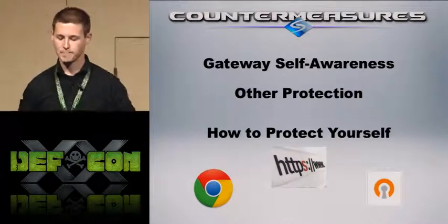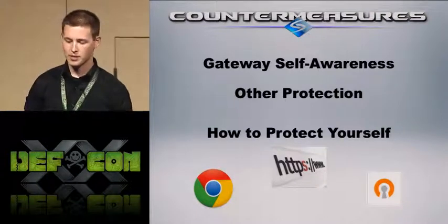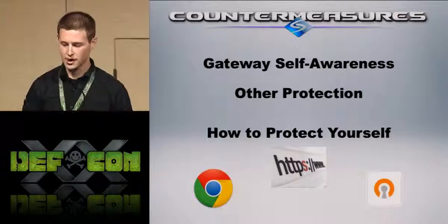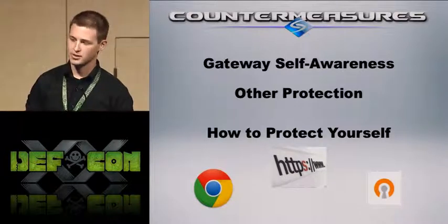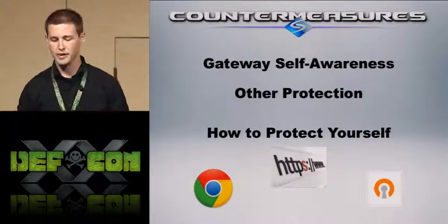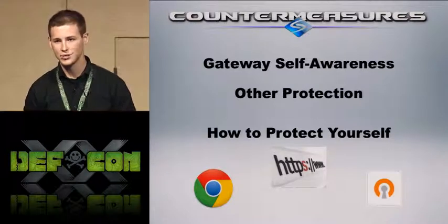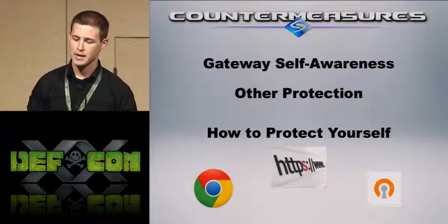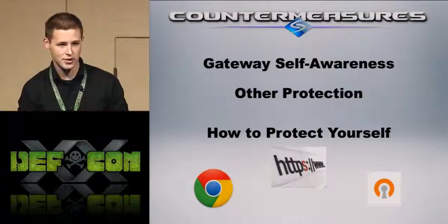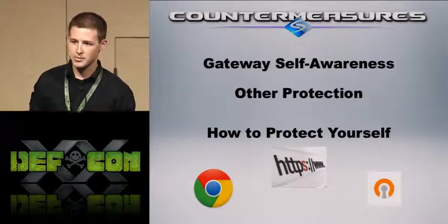Now we've talked a lot about Subterfuge, and in the end we really want router companies to be fixing this at the consumer product level. But let's talk about some countermeasures and how you can protect yourself in the meantime. I'm going to give a quick explanation of a quick fix I'm calling 'gateway self-awareness.' Without much overhead, if the gateway is just self-aware of its own network adapters — knows its own LAN MAC address and LAN IP address — that can prevent all these attacks. If a router gets a packet that says 'here's the router's IP address' but that's not its MAC address, it drops the packet and the attack is thwarted.